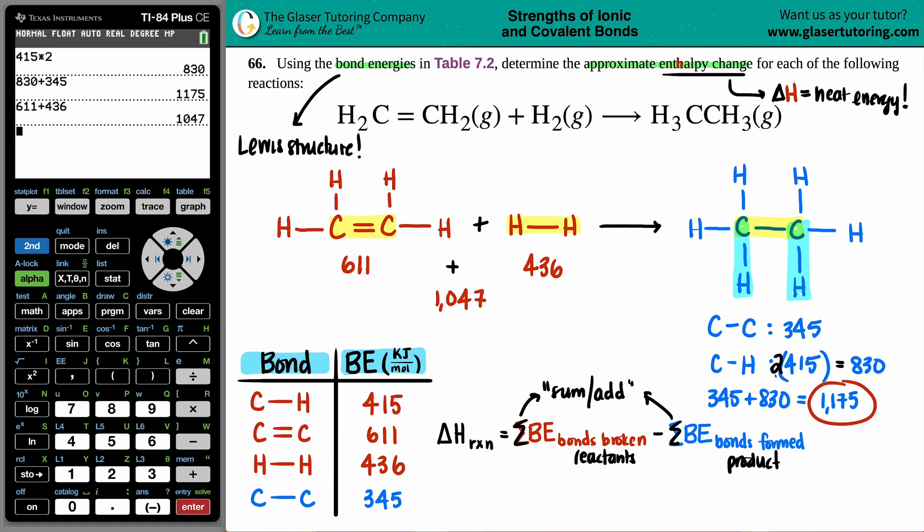Now we're just ready to go. Delta H for the whole entire reaction is that sum of the reactants, 1,047, minus the product side, the bonds formed, which is 1,175. Now all we got to do is just do the math. Delta H approximately is, drumroll please, this minus this. Turns out that this reaction is exothermic because it is negative: -128 kilojoules per mole is the amount of energy that is lost into the surroundings because it's exothermic. You're releasing the 128 kilojoules, and that's the answer.